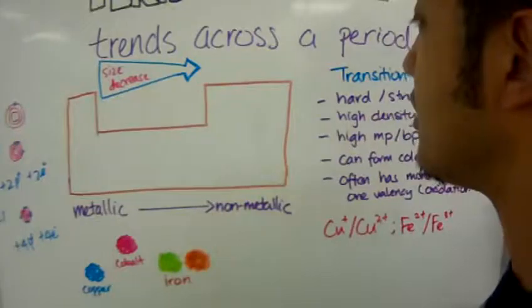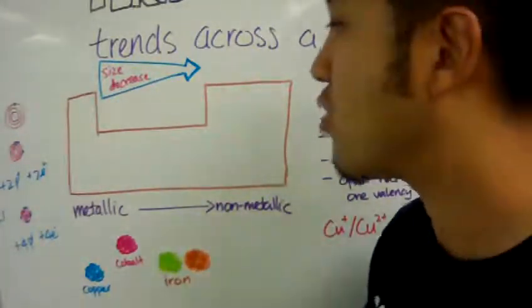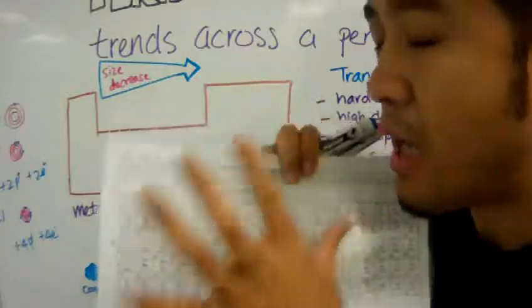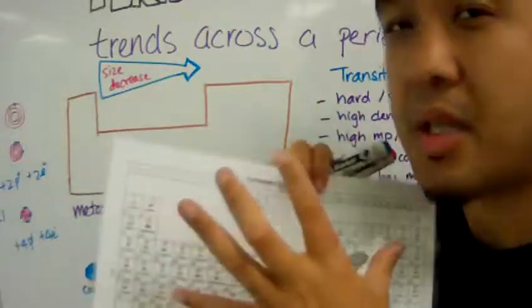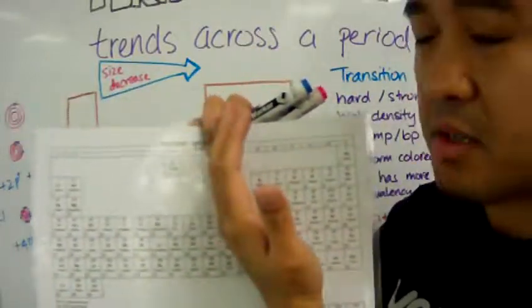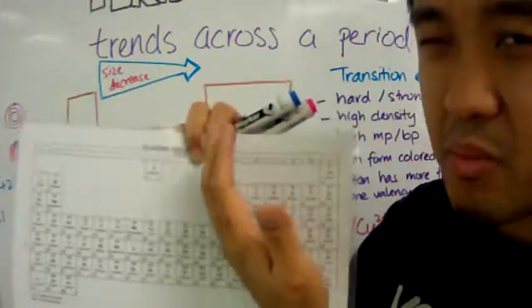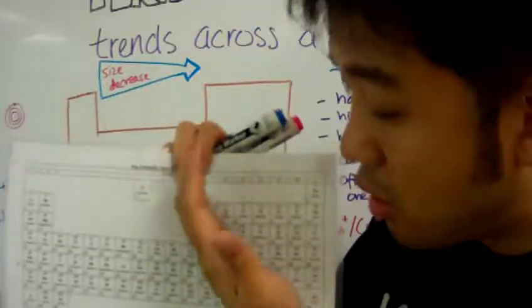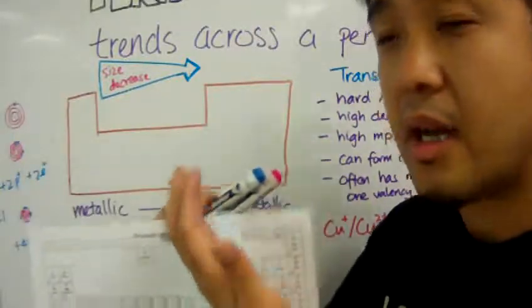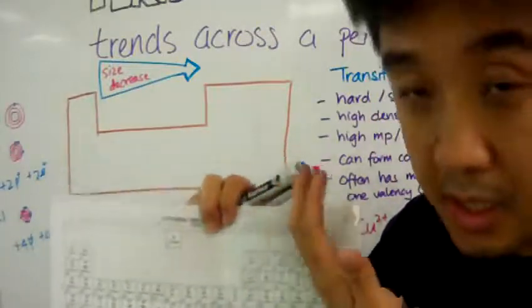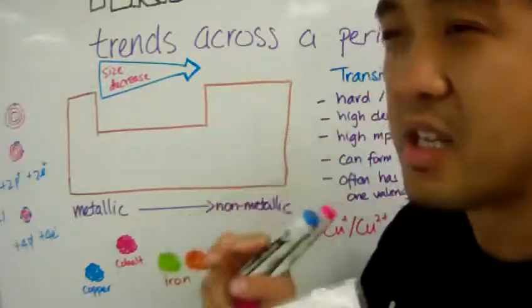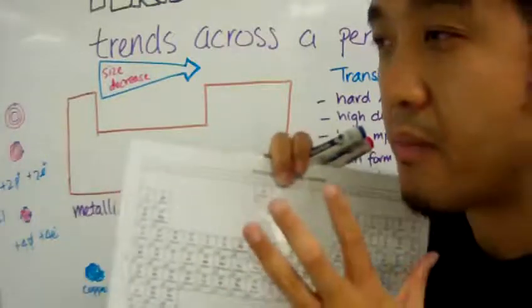So that is the general trend. And also, when you go across the period from left to right, you would see that the elements will lose its metallic character. That means it comes from very metallic, and then it will start losing its metallic character. By the time it gets around here, it will be like a semi-metal or a metalloid. That means these elements will behave like a metal in some instances and like a non-metal in other instances. And then it becomes very non-metallic. And the reason being, it also boils down to the bonding nature when these elements form bonds.